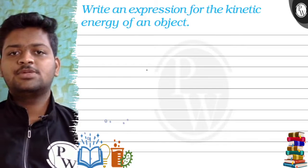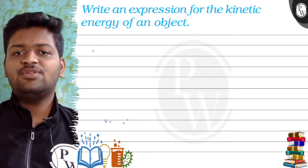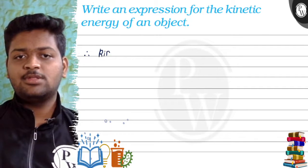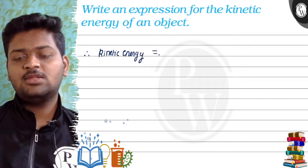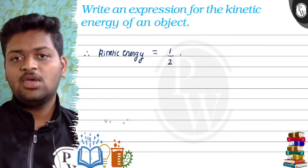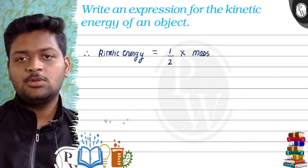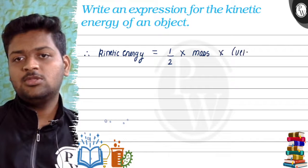Let's see this question: write an expression for the kinetic energy of an object. So here they are asking us for an expression for kinetic energy. We should learn the basic expression for kinetic energy, which is half into mass into velocity square.